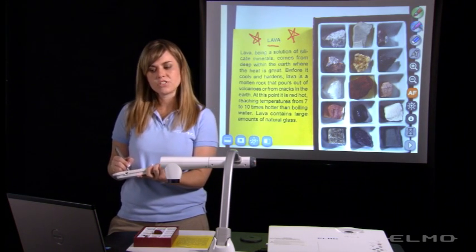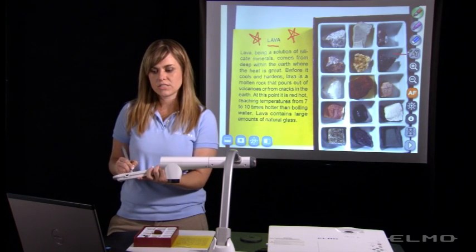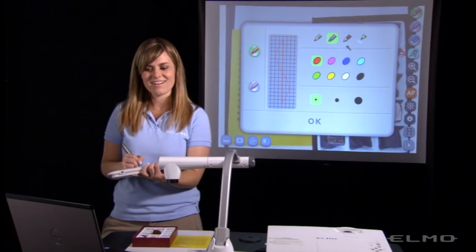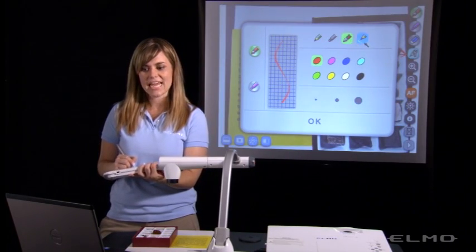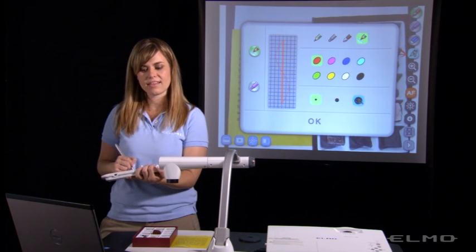Now we've given you two pens so that you can toggle back and forth. Let's go to the pen settings. There's pencil, highlighter, fountain pen, and straight pen. You can choose the color and the thickness here.